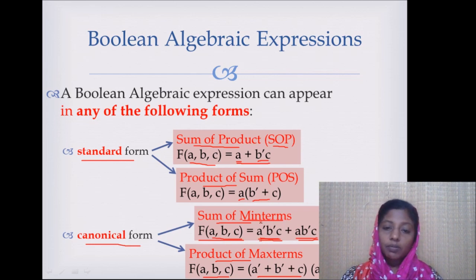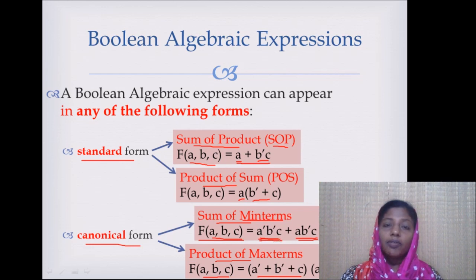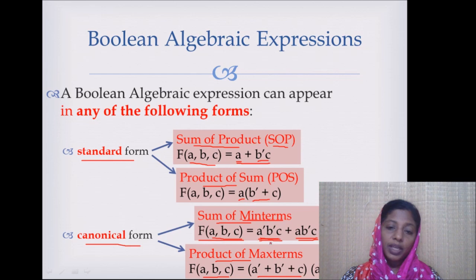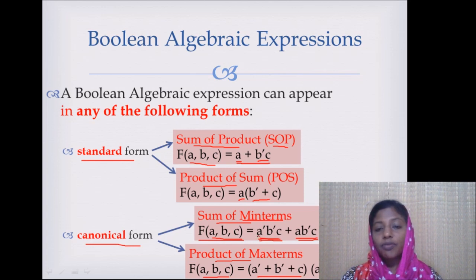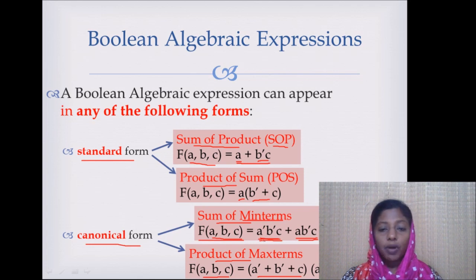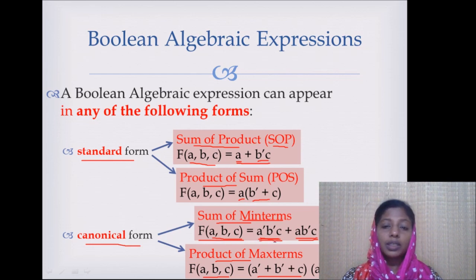We call this product a minterm because the satisfiability of this term is minimal. Satisfiability means: when we get the output of this product equal to 1, the expression is satisfied. How many combinations of values of a, b, and c will make the sub-expression āb̄c equal to 1? There is only one possibility — ā must be 1, b̄ must be 1, and c must be 1. We have very minimal choice, only one choice for this term to output 1, so the satisfiability is minimum — that is why it is called a minterm.